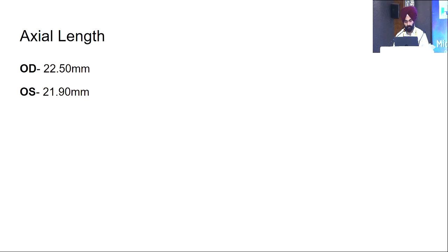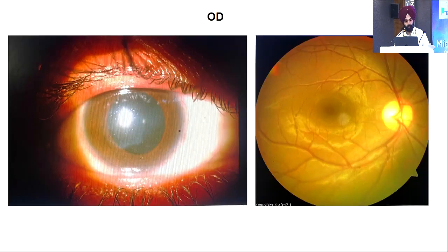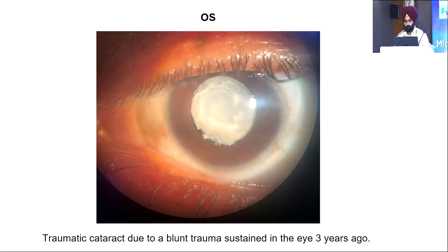Axial length of the eyeballs was 22.5 mm for the right eye and 21.9 mm for the left eye. Images show the central nebular opacity in the right eye; the posterior segment of the right eye was within normal limits. The other picture shows the traumatic cataract due to blunt trauma sustained in the left eye three years ago, as stated by the patient.